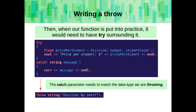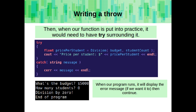When our function is put into practice, we would need a try surrounding the call to that function. Also, the catch parameter needs to be the same data type as the one we are throwing. When our program runs, it will display the error message if we want it to, and then it will continue.